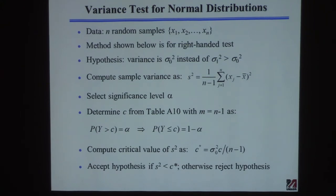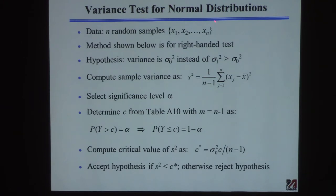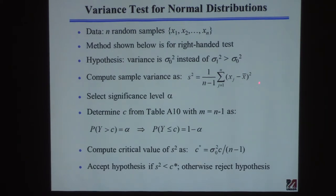Now the question is how to do tests on the variance. You have n samples. For variance, you typically only do a right-handed test — if somebody is making a product and the variability is less than expected, that's fine, because variability is bad. We're only worried about if the variability is too high, not if it's too low. So for variance testing, we use the chi-squared distribution. We take our samples, compute the mean, and from the mean calculate the sample variance S squared.